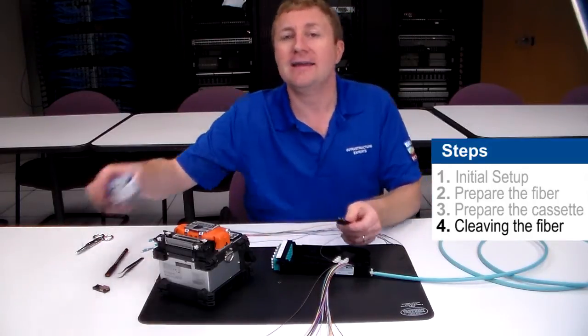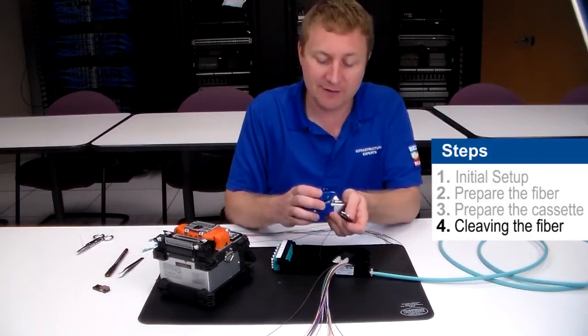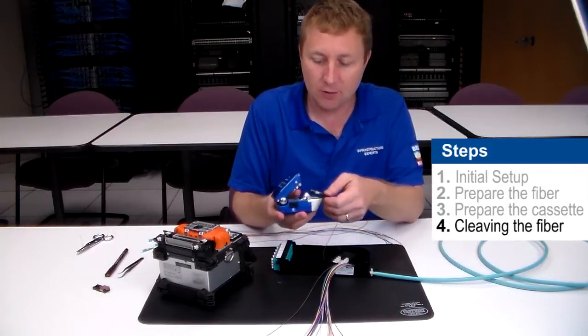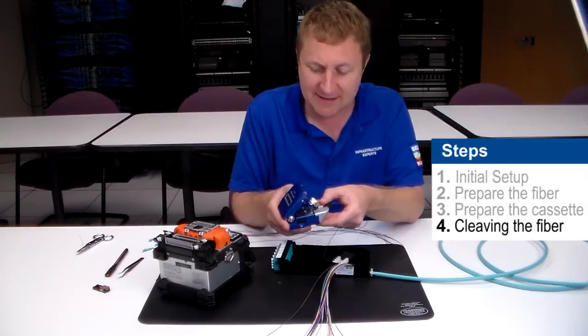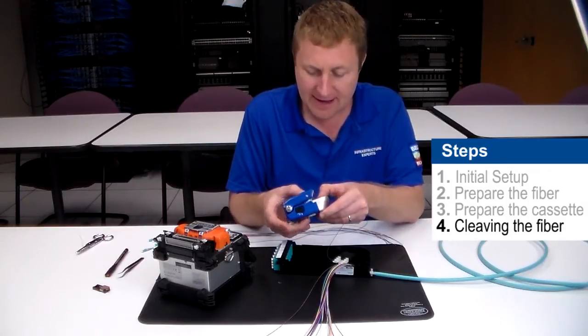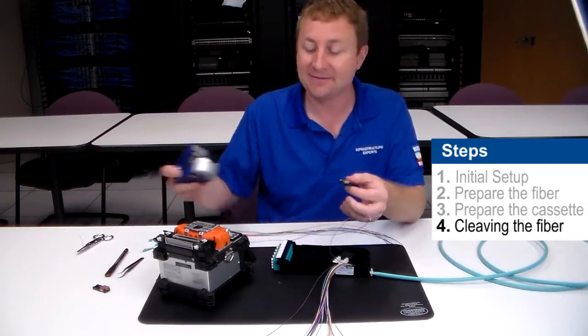Once it's in the groove I can take the precision cleaver for my Brilliance kit and I can take that fiber holder, lay it right in my cleaver, make sure the fiber is flat on both sides, activate it and I can go ahead and cleave the fiber.